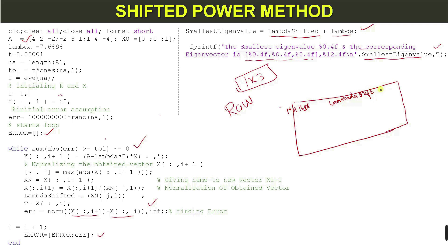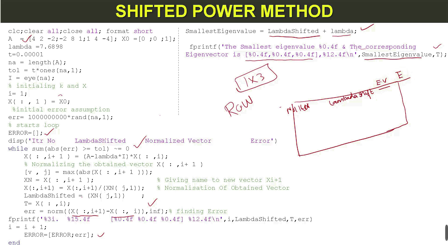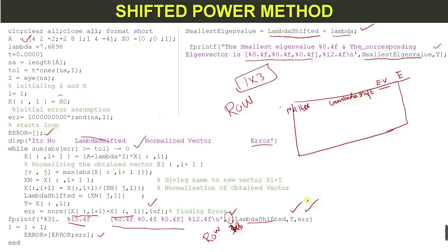To draw a table of number of iterations, lambda shifted, eigenvector, and error, I use the disp command for headers and fprintf command to display all results. The format string uses %3i for iteration number, and the normalized eigenvector is a 1x3 row vector. This gives results in table form showing iterations, lambda shifted, eigenvector, and error.